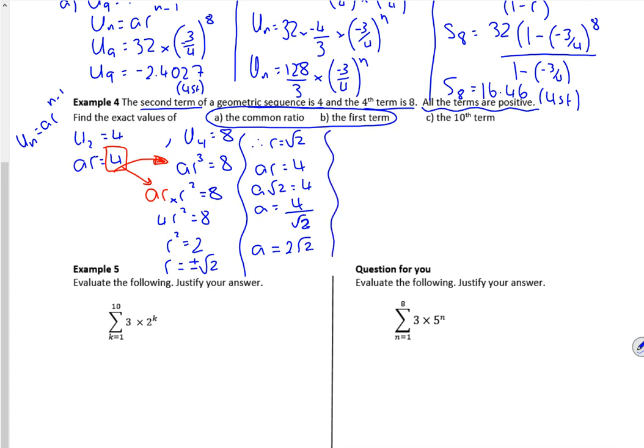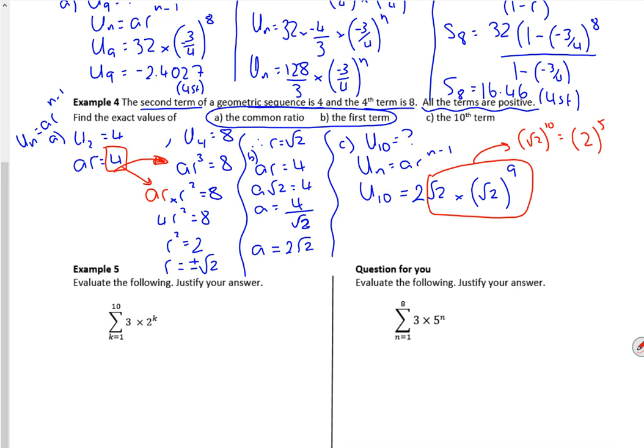So let's look at c now. So the tenth term, so u ten. So un is ar to the n minus one. What was it? It was the first term, two root two, wasn't it? Two root two times by r is root two. So ten minus nine. So it's quite sneaky, this. If you look at this bit here, if you do a little bit of algebra here, you've actually got root two to the power of ten. But root two times root two is two. So that's actually two to the power of five. So what I've actually got, I've got two times two to the power of five. So u ten is actually two to the power of six. Which is sixty-four. There you go. I don't like a bit of algebra.